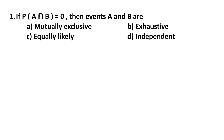Question number 1. If probability of A intersection B is equal to 0, then events A and B are: mutually exclusive, exhaustive, equally likely, or independent.